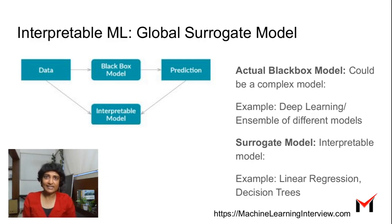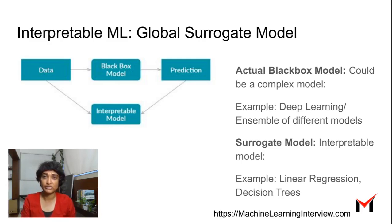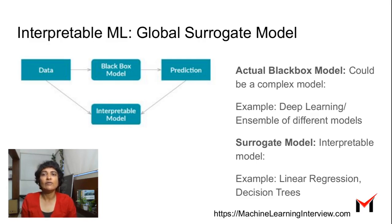The basic idea here is extremely simple. You have your input data, and your actual model could be a black box model — a complex model, a deep neural network, or an ensemble of SVM, random forest, XGBoost, and different things. That black box model is actually used to make predictions. But once you make predictions, we have another model — a surrogate model which is highly interpretable, like a decision tree or a basic regression model. We train the surrogate model with the same training data but with the target variable as the predictions from the black box model.